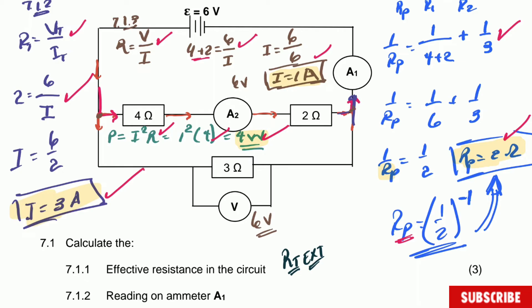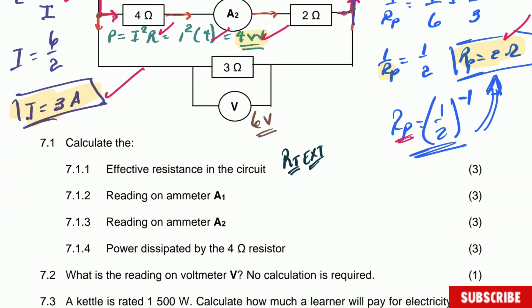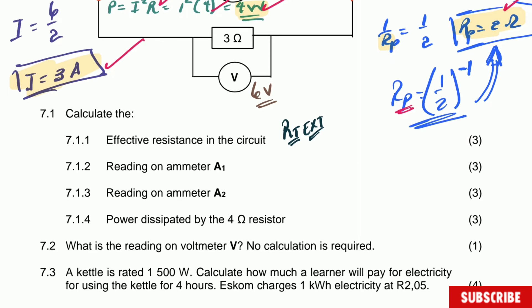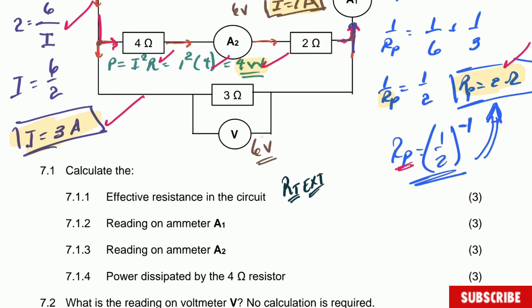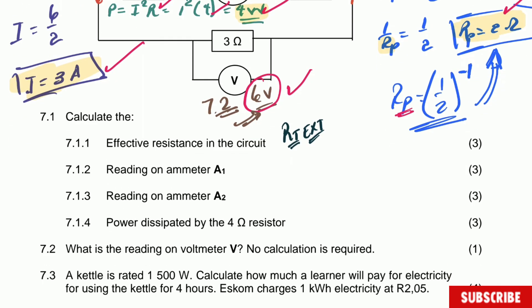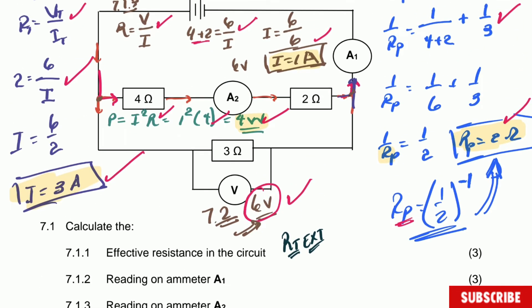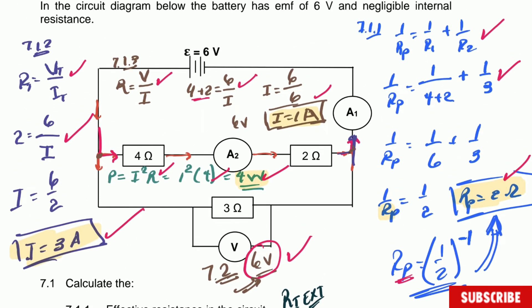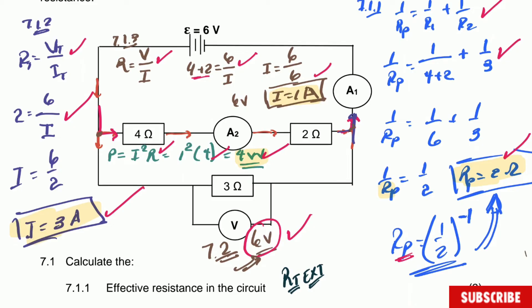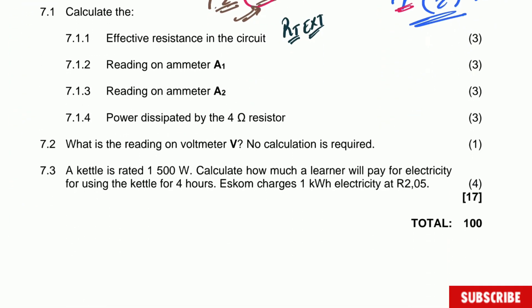Question 7.2 asks for the reading of the voltmeter V — no calculation required. We already answered this: it is 6 volts. This is because everything is in parallel, and in a parallel connection the potential difference is the same across all branches. That is one mark.